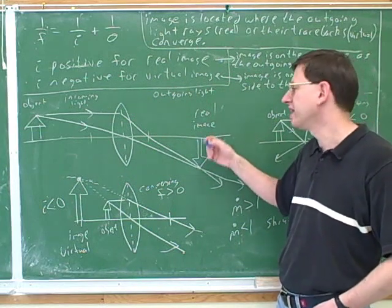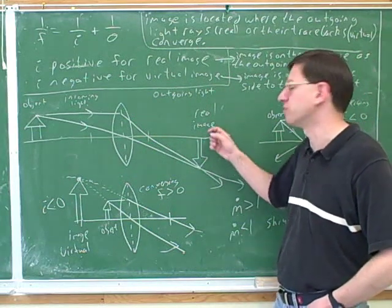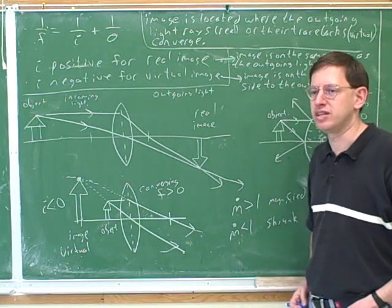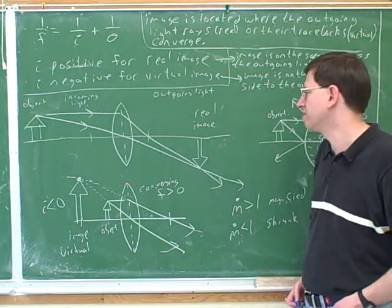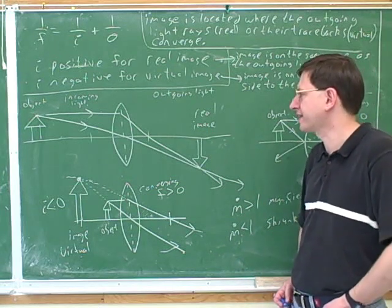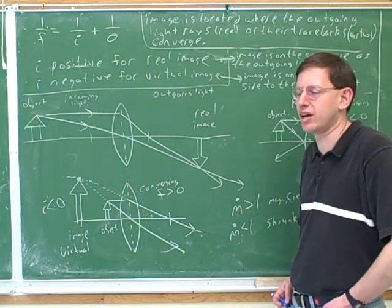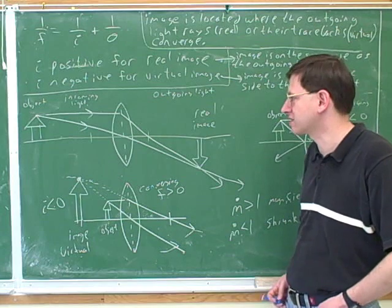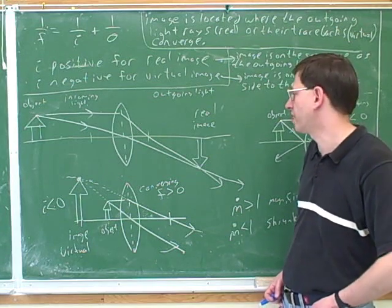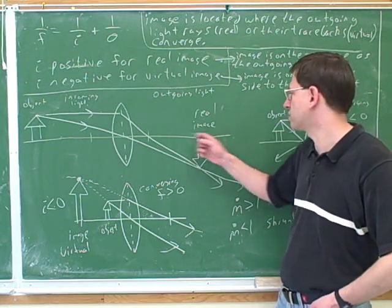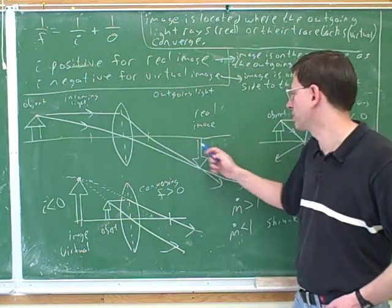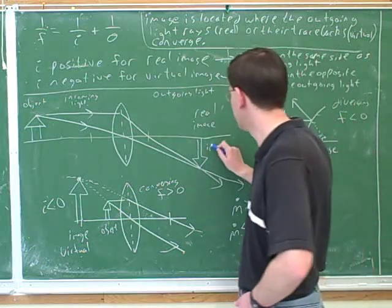The technical definition is that an inverted image has the opposite orientation to the axis. The object here is pointing up from the axis and the image is pointing down from the axis, so it really has been inverted — reflected around the axis. This is one reason why it's usually a good idea to draw the axis through the center.